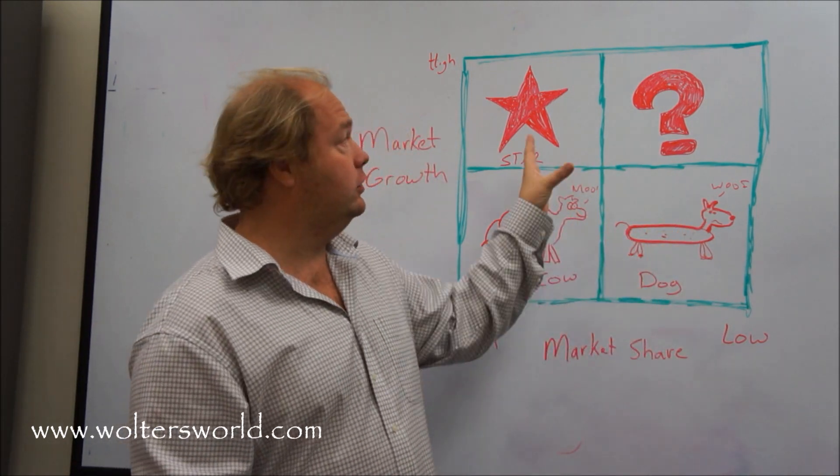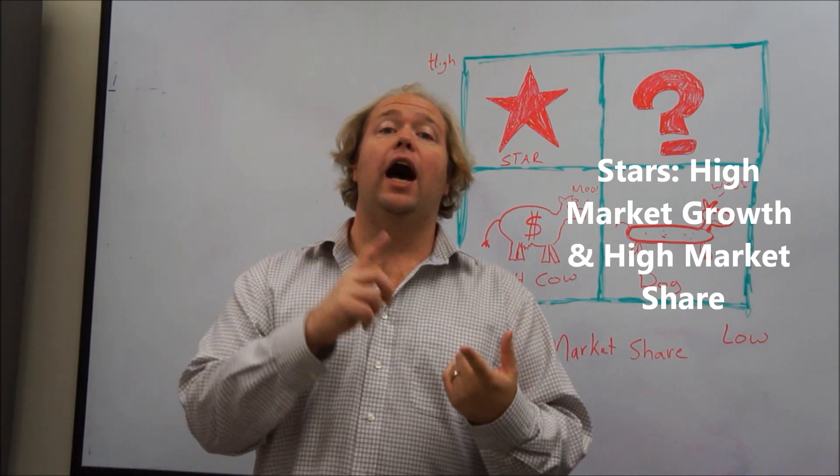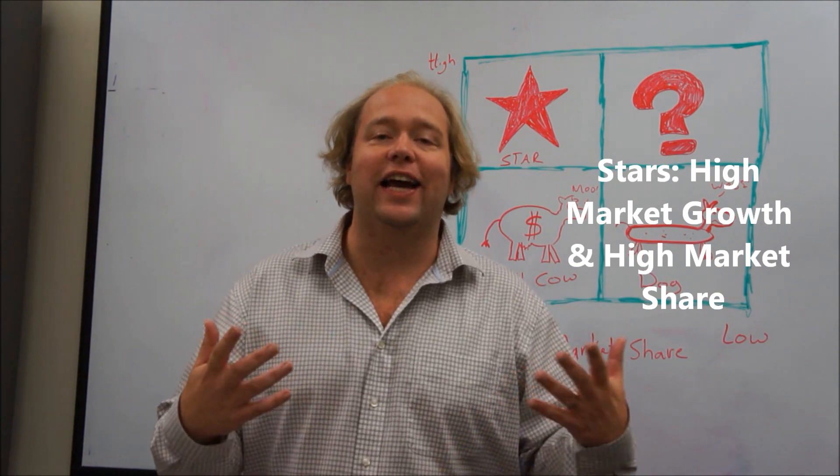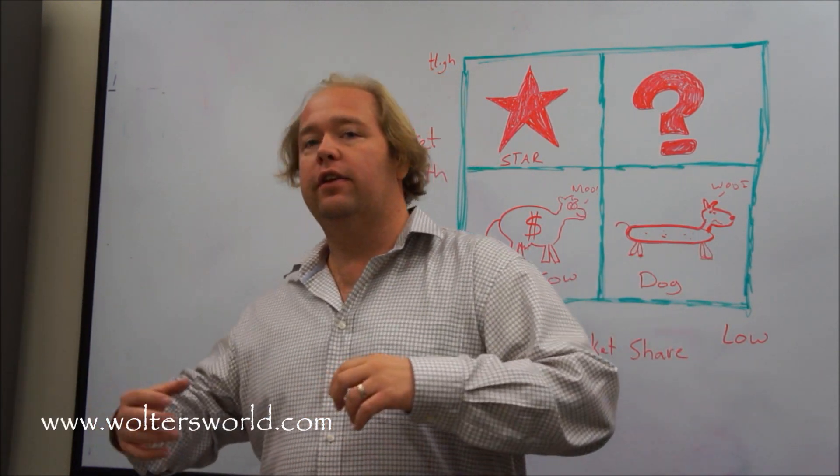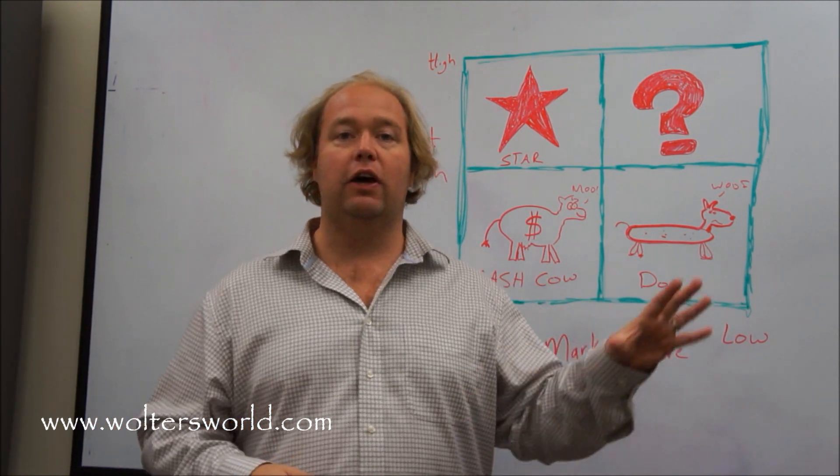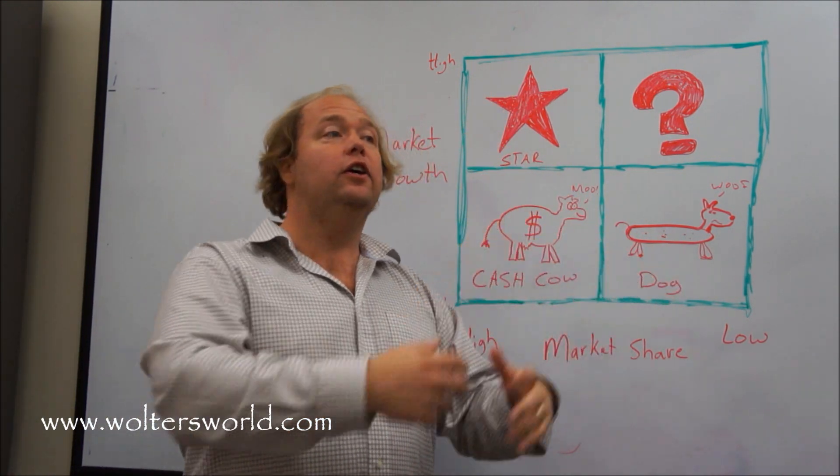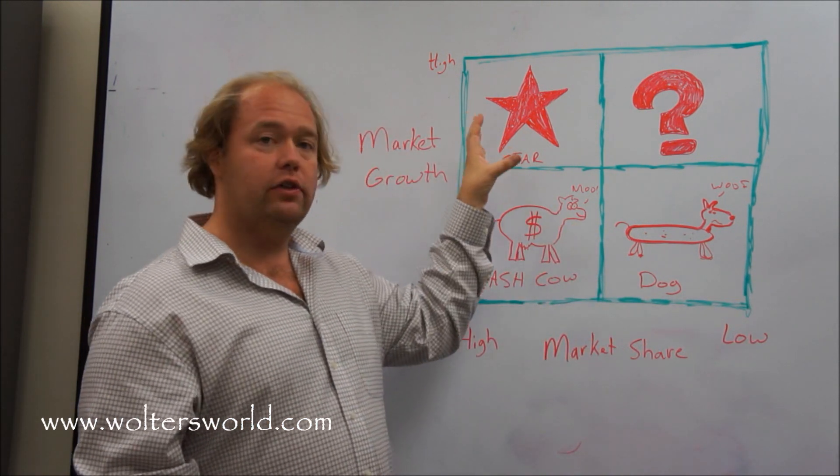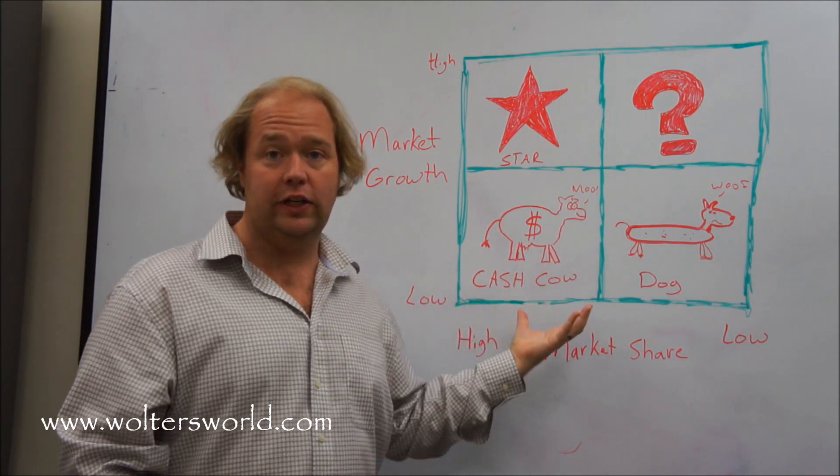Now, the second one I want to talk about is the star. A star is a high growth industry, and you're the big time player. So in tablet computers, we're looking at the iPad. That is a star for Apple. Tons of people are buying it, the market is growing and growing for tablets, and Apple is number one with the iPad. So that would be a star for them. These ones, you're going to invest more money into it because it's still growing. So we've got to have more production for it, we've got to get it out there, because products that are stars don't always stay as stars. Eventually, sometimes they come out, and hopefully they turn into cash cows.